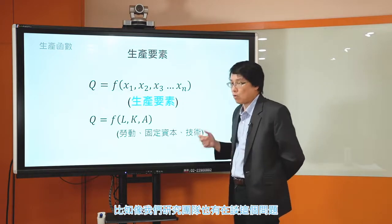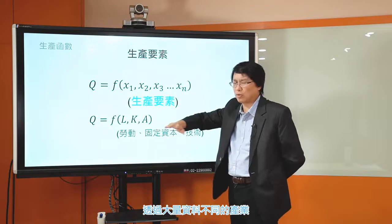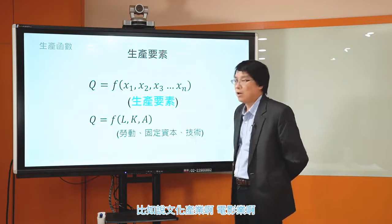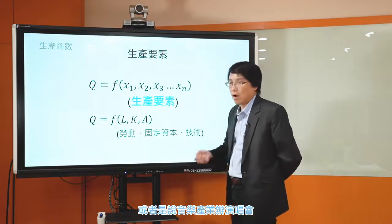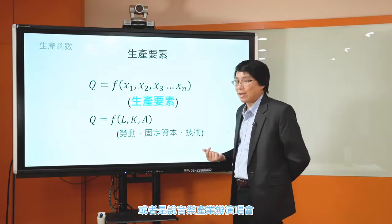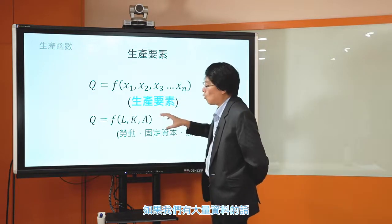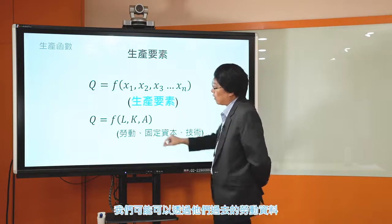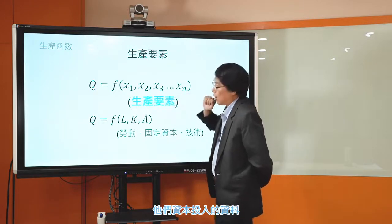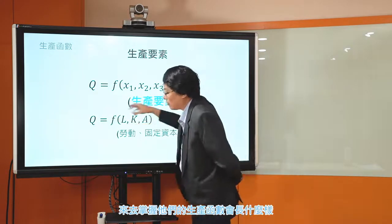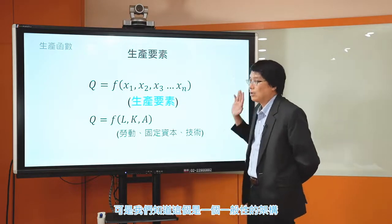所以生產函數基本上就是一個一般性的架構，描述勞動、固定資本以及技術和產出之間的關係。不同產業不同廠商這個情況可能不大一樣，要了解不同產業的情況你可能要具體到每個產業去細究。比如我們研究團隊也有在探討文化產業，像電影業或音樂產業辦演唱會，透過大量的勞動投入和資本投入的資料去掌握它們的生產函數。